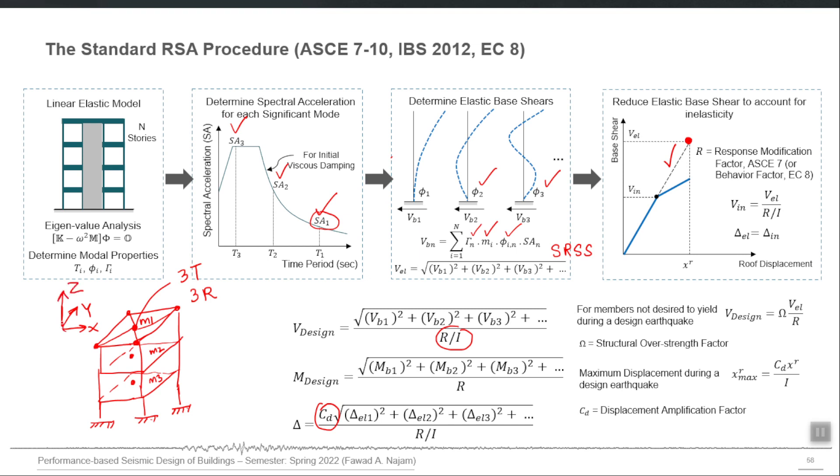So for that diaphragm we will be mostly interested in Rz, how the diaphragm rotates about the vertical axis, and the two translational axes which are two horizontal directions. So maybe ux, uy, and Rz.